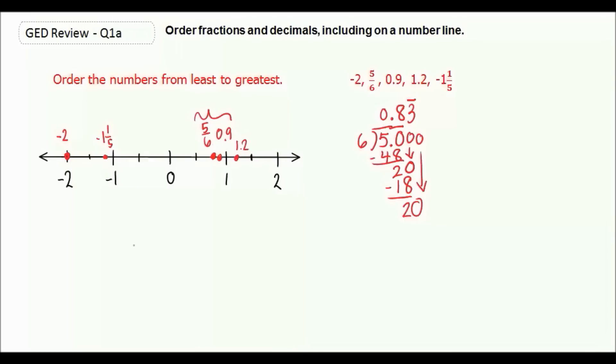So if we put them in order from least to greatest, it would be negative 2, negative 1 and 1/5, 5/6, 0.9, and 1.2.